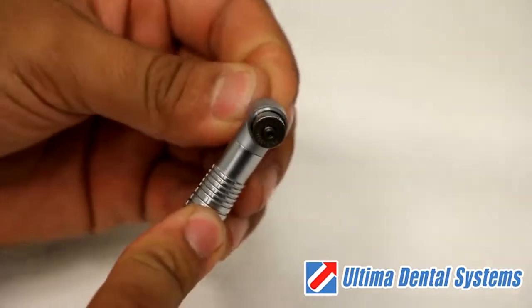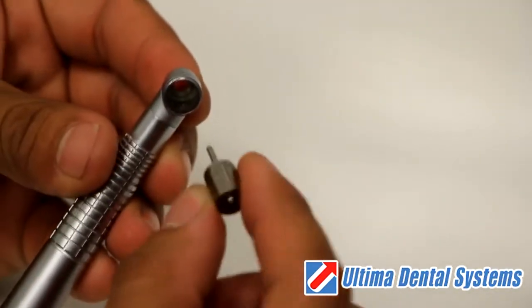Push up on the seated burr or blank and remove the old turbine from the handpiece.